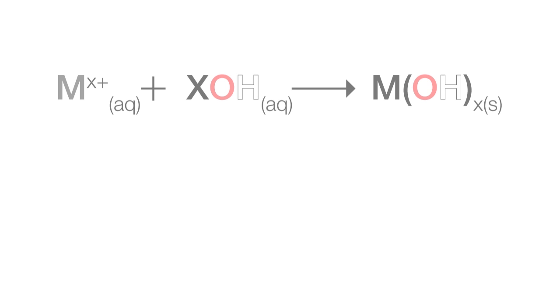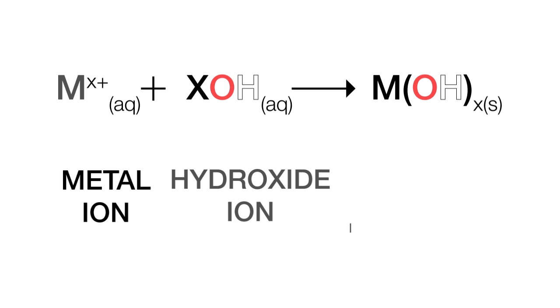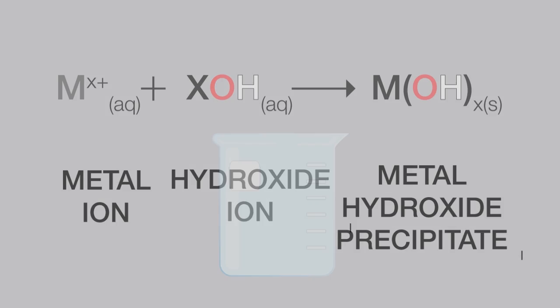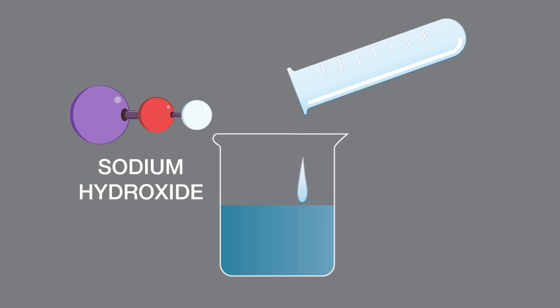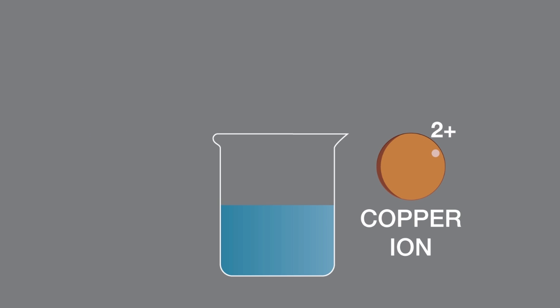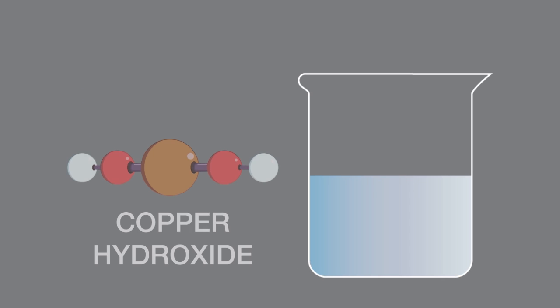The general equation for the reaction is metal ion plus hydroxide ion gives a metal hydroxide precipitate. Addition of sodium hydroxide to a solution containing copper 2 plus ions creates copper 2 hydroxide, which is a blue precipitate.